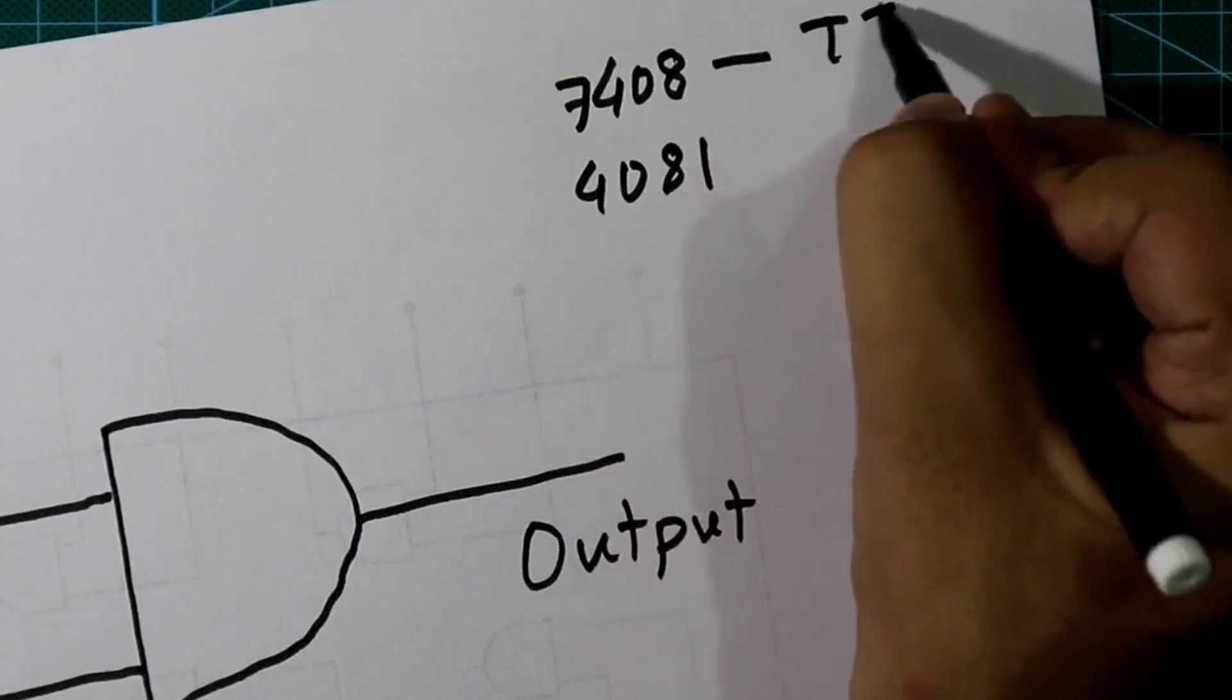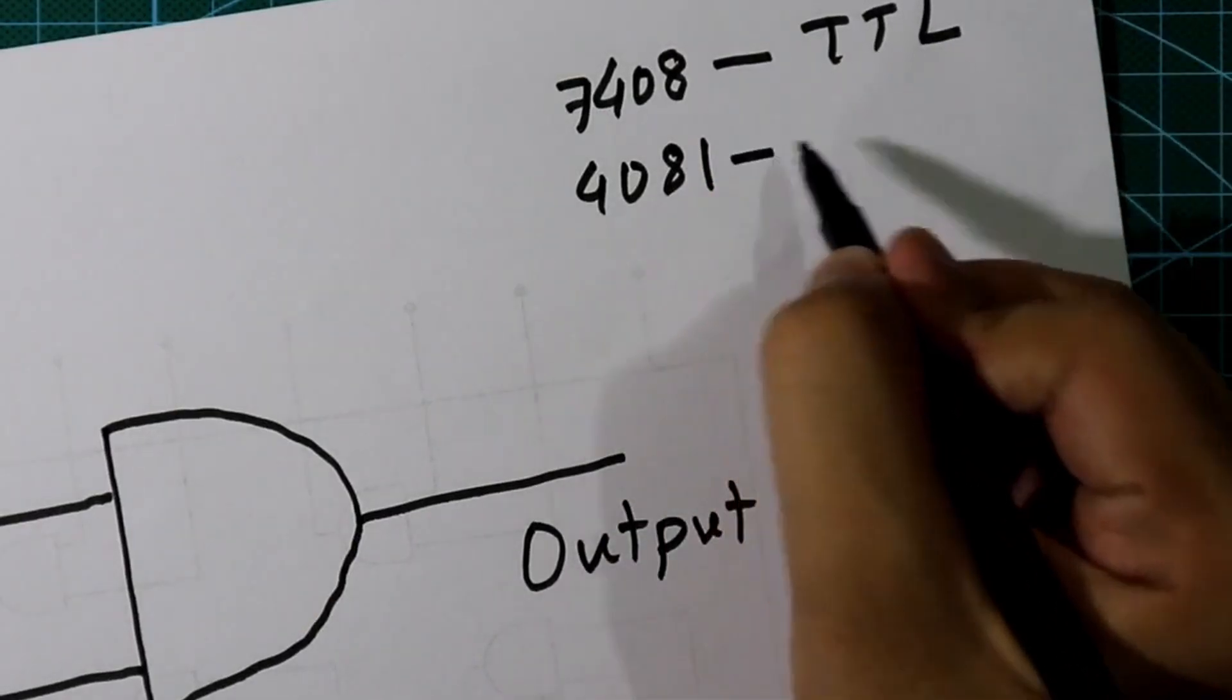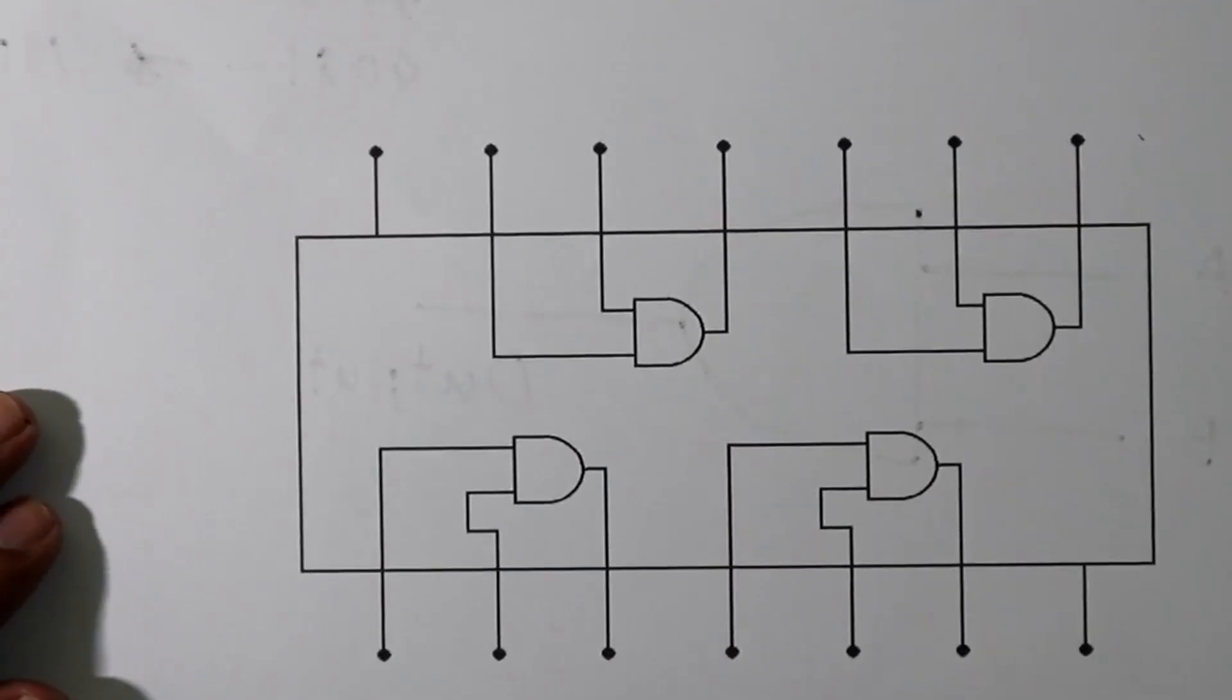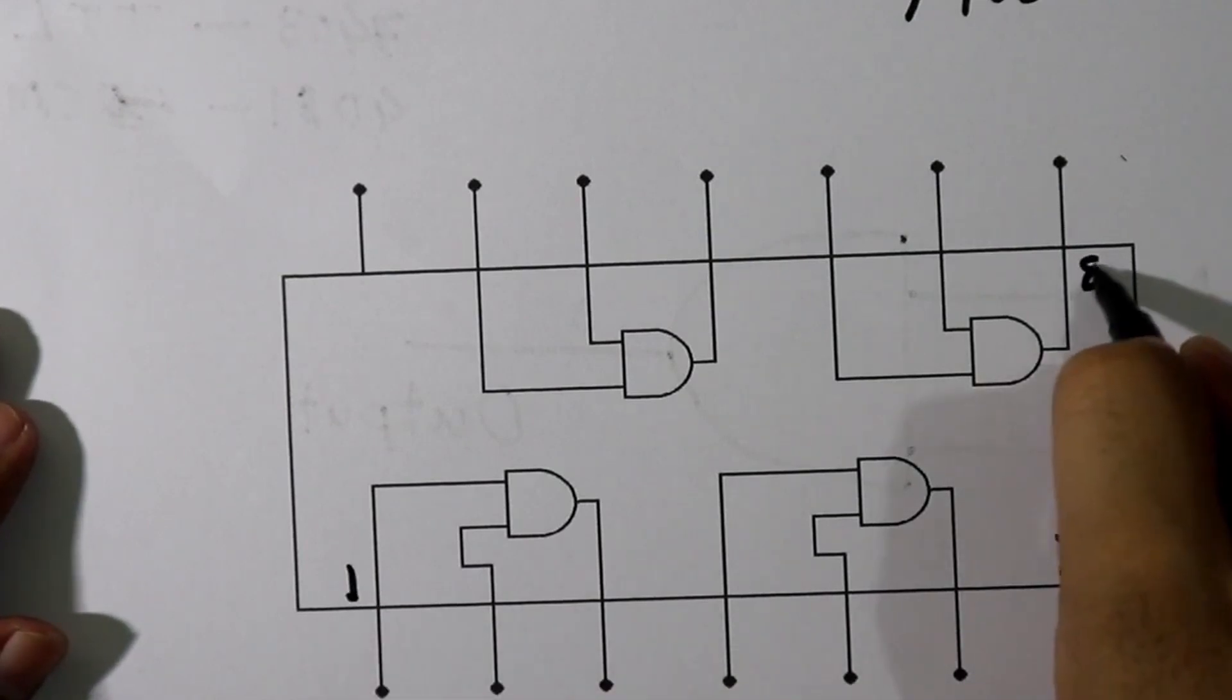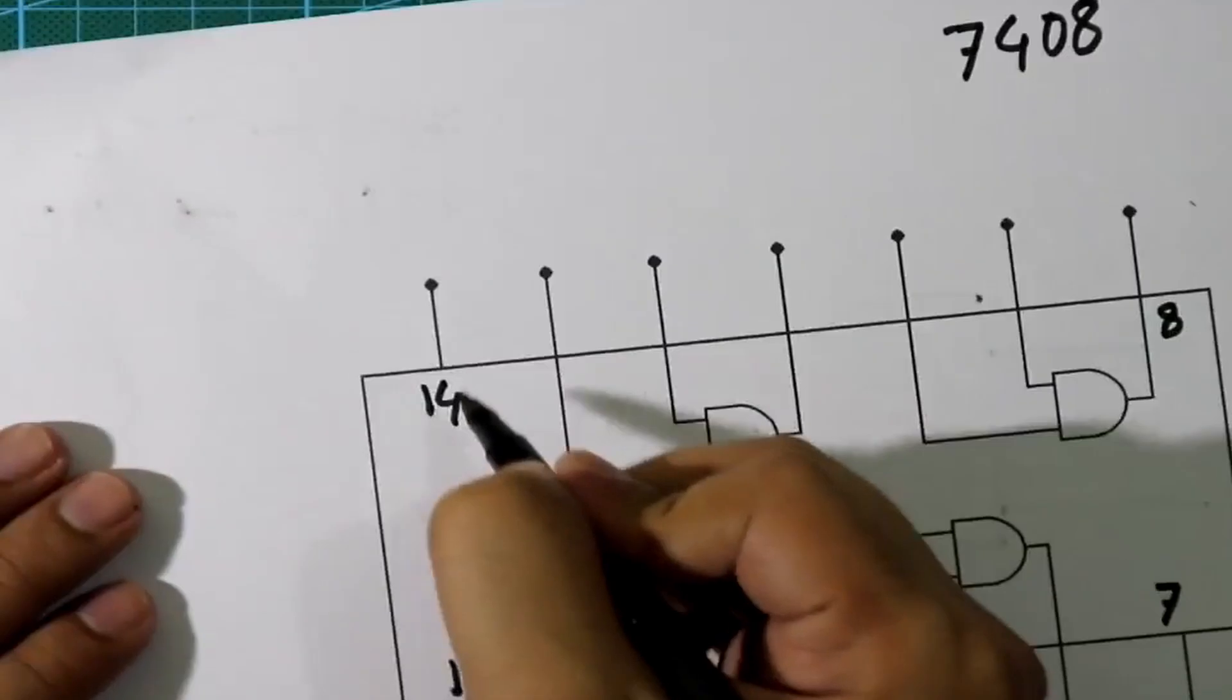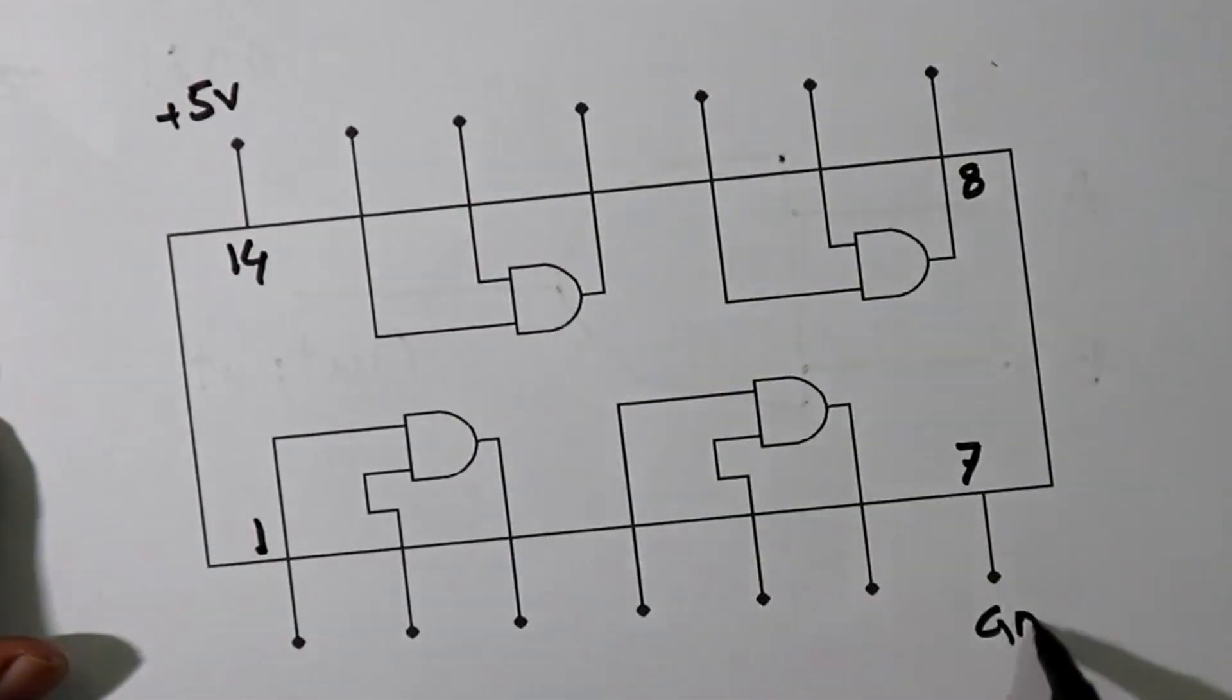This IC is TTL logic, transistor-transistor logic, and this one CMOS. This is the pin diagram of 7408. This one pin number 1 up to pin number 7 and pin number 8 to pin number 14. Pin number 14 should be connected to the plus 5 volt and pin number 7 is ground.